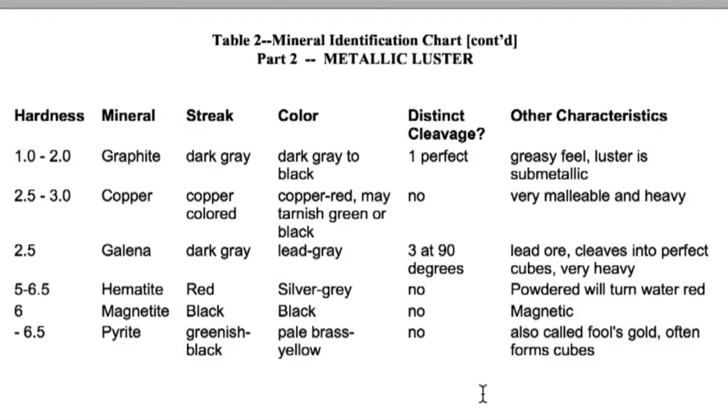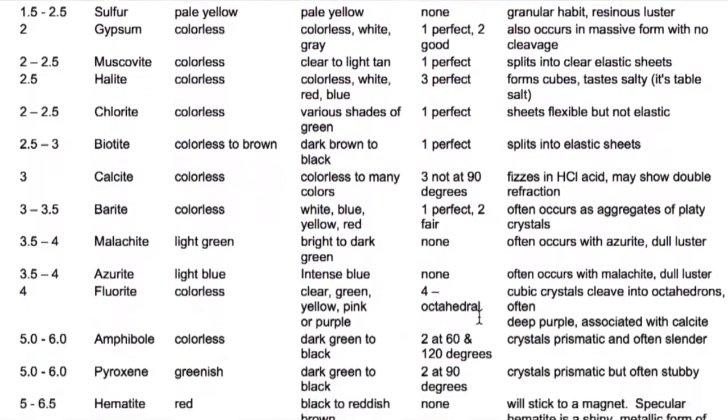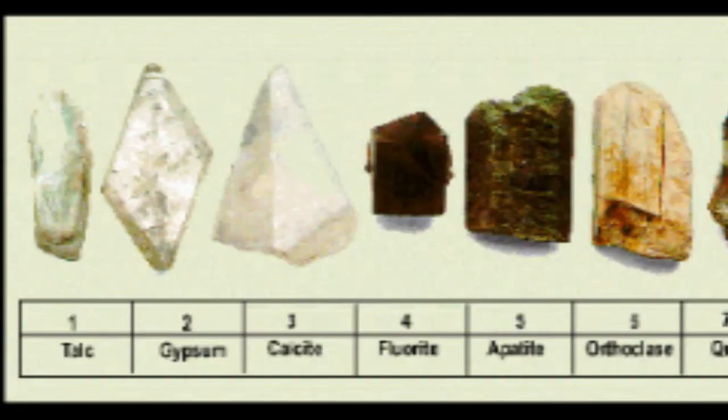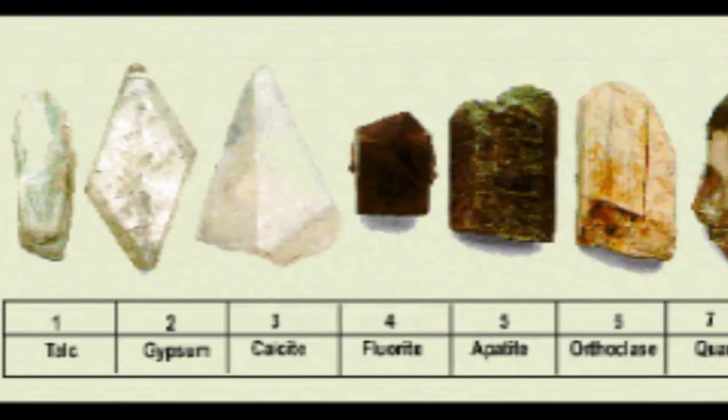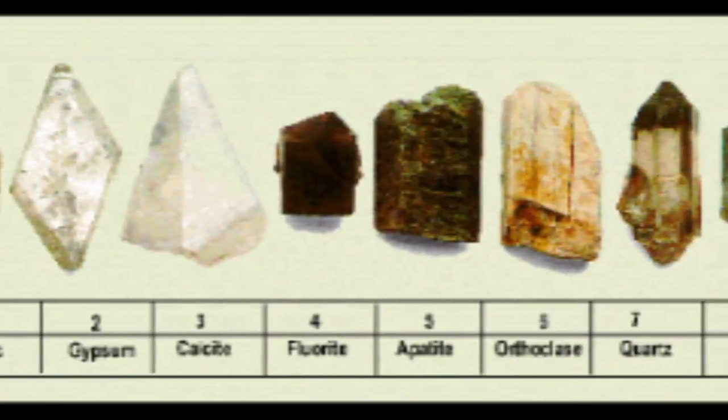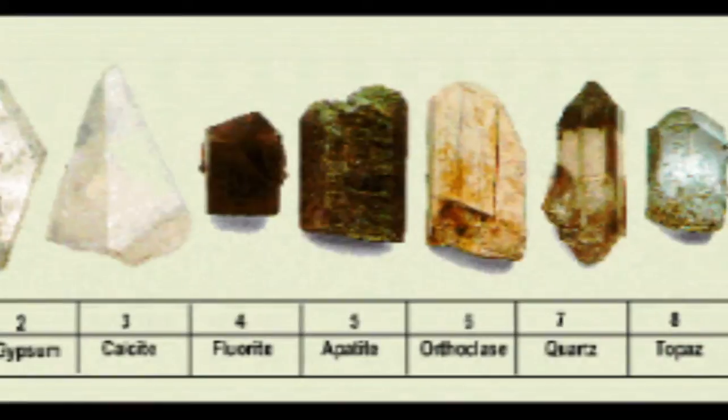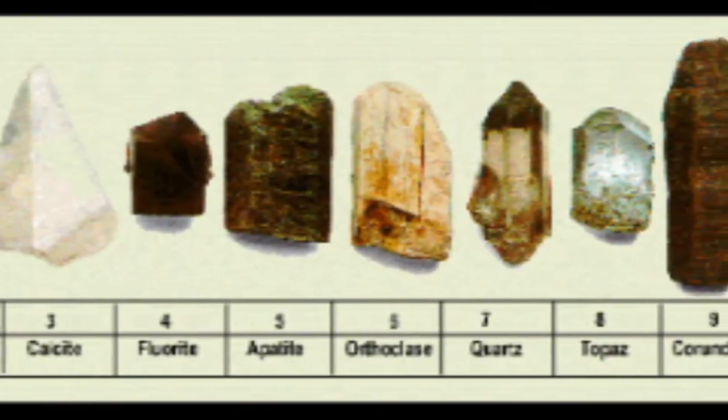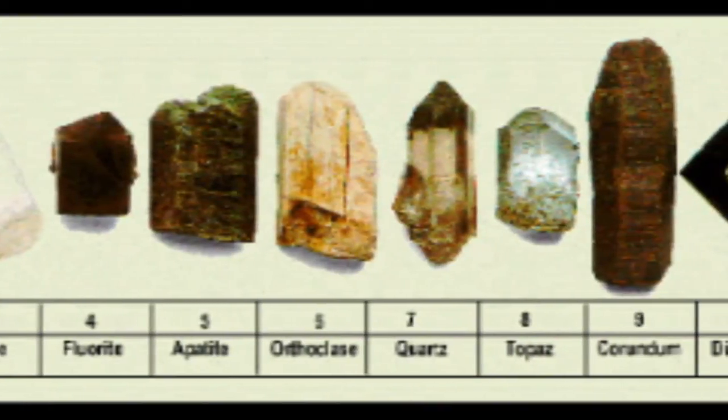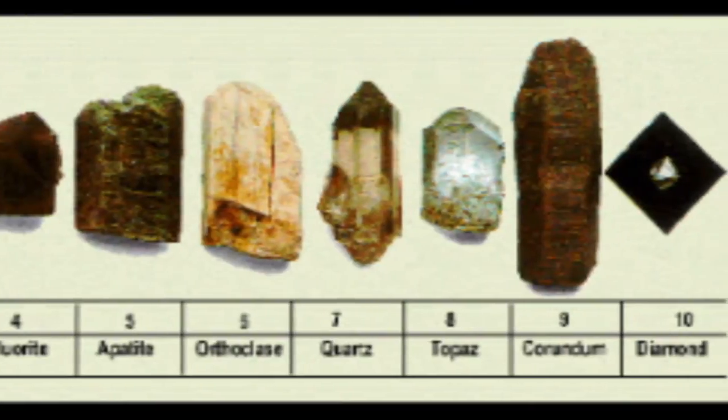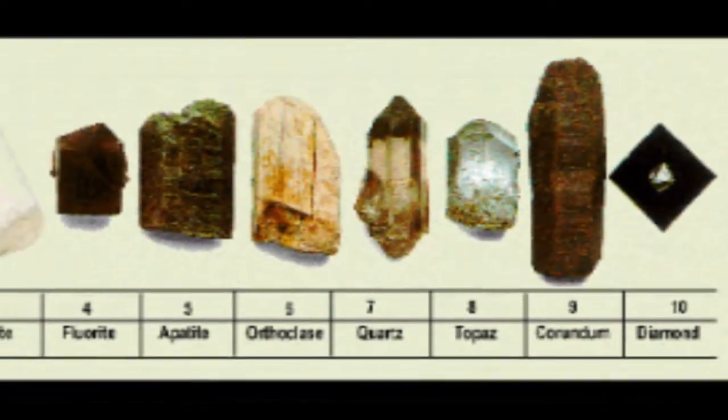We now have split off a few metallic luster minerals from the majority of non-metallic minerals. The next step in our dichotomous key is to test the mineral's hardness. The Mohs scale of hardness is a relative scale from 1 to 10, with higher numbers being able to leave a scratch in the surface of softer minerals.